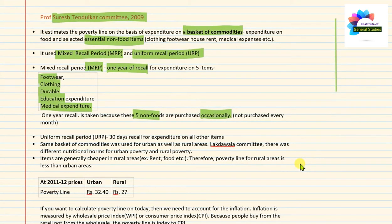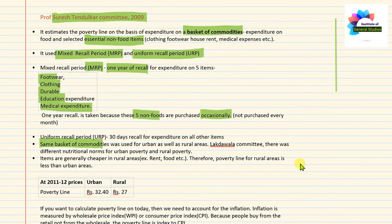An important feature of the Tendulkar Committee is that the same basket of commodities — including food items and non-food items — was used for both urban and rural areas, unlike previous committees which used different nutritional norms. Items are generally cheaper in rural areas; for example, house rent in rural areas is less than in urban areas.